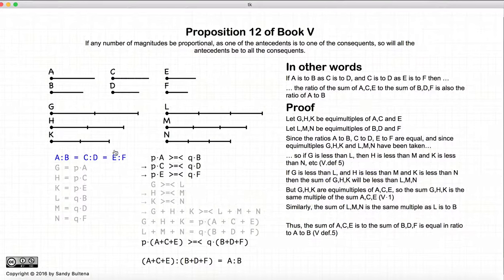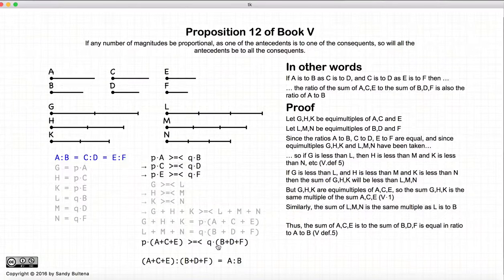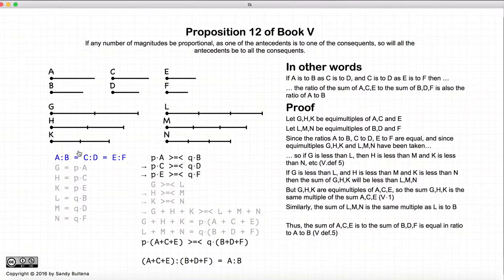So now we have this relationship implying that P times the sum of A, C, and E is greater than Q times the sum of B, D, and F if P times A is greater than Q times B. Looking at this relationship, by definition that means the ratio of A to B is equal to the ratio of the sum of A, C, and E to the sum of B, D, and F, as is shown right here. So therefore, what we've done is shown that you can take equal ratios, add up the antecedents and add up the consequences, and form a ratio that is equal to the individual ones.